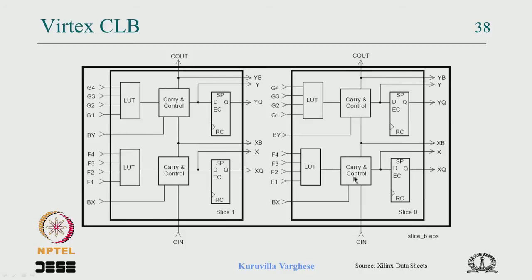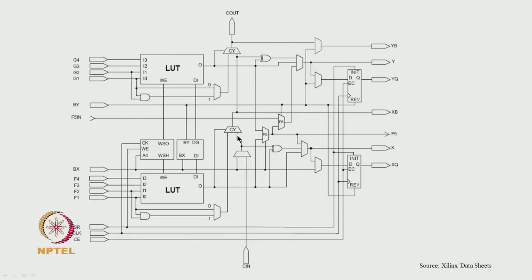This is the CLB or configurable logic block of the Virtex FPGA. It has two identical parts called slices, and within a slice you have two again identical parts. One part consists of a four-input lookup table which can implement any Boolean logic function of four variables. The output can go to a flip-flop, and this is the four-input output that can be used as a combinational output. You can combine the two four-input lookup tables using a MUX where the select line acts as a fifth variable.